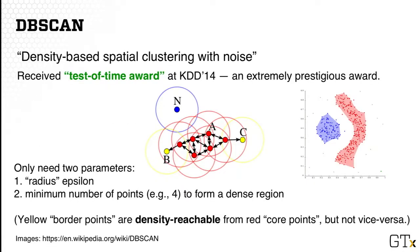The final method is called dbscan, which stands for Density-Based Spatial Clustering with Noise. It's a great technique — it received the Test of Time Award at the top data mining conference KDD in 2014, an extremely prestigious award, meaning it still has impact today even though it was designed over 10 years ago. A great thing about dbscan is that it only needs two parameters: one is the radius (epsilon), and the other is the minimum number of points needed to form a cluster.